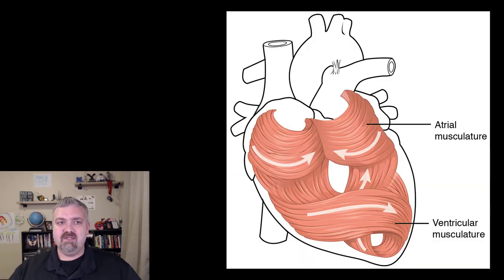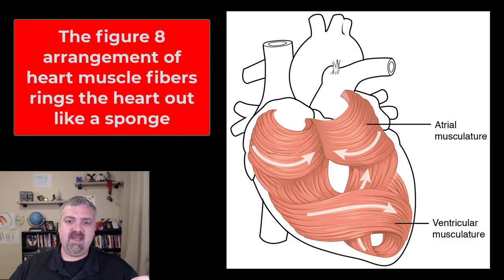Alright, so here we see the heart musculature. What makes the heart so amazing is how the muscles swirl around to form your heart in a figure eight pattern. So you basically have a figure eight pattern of musculature in the top of the heart, the atria, and another figure eight pattern at the bottom.